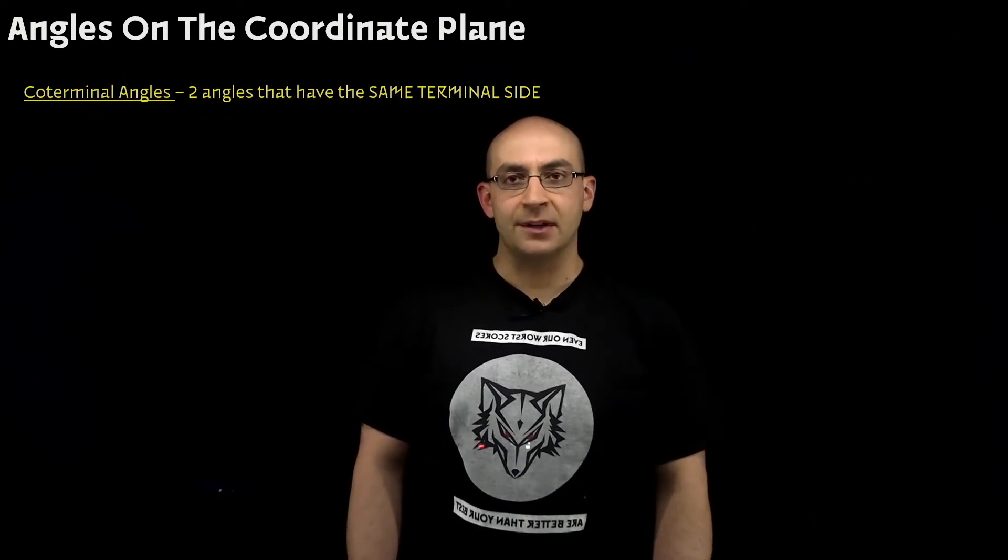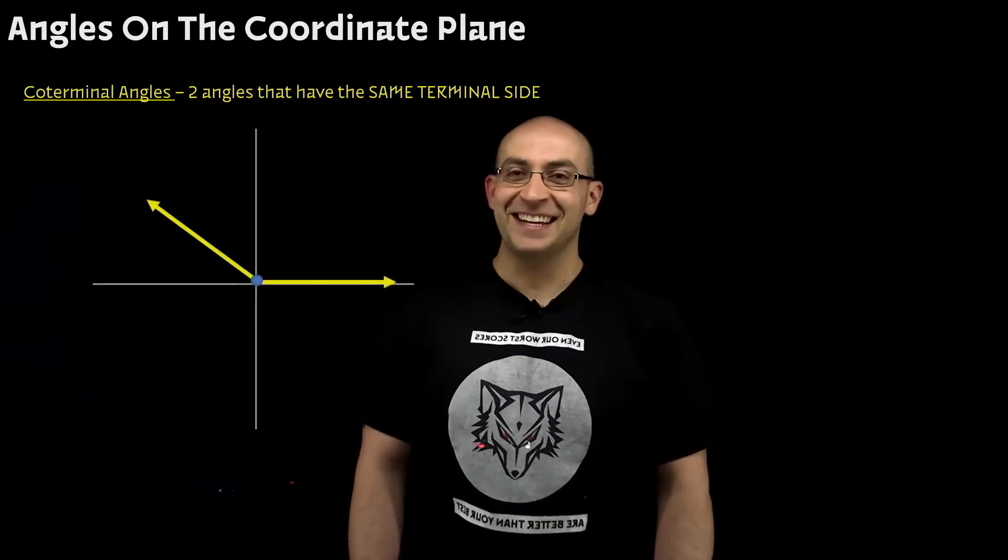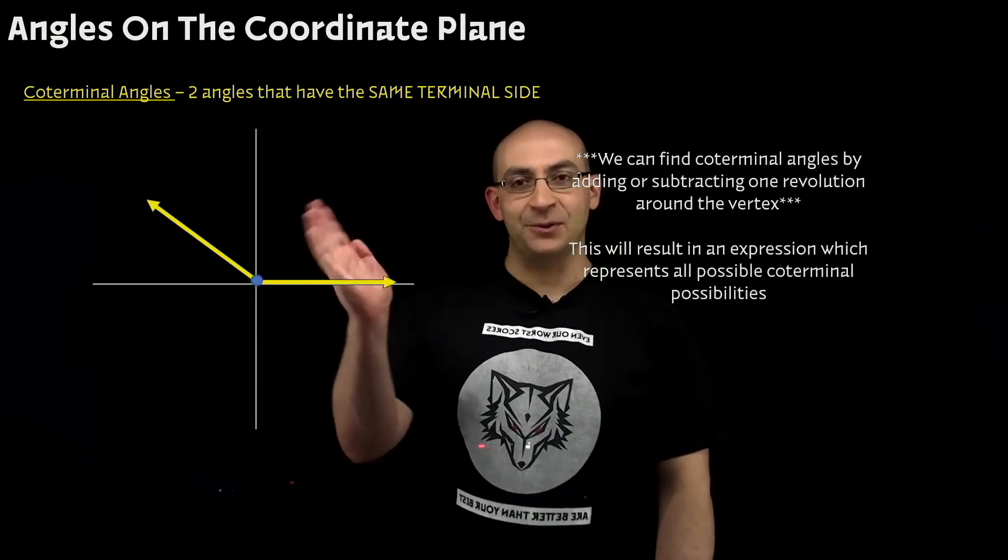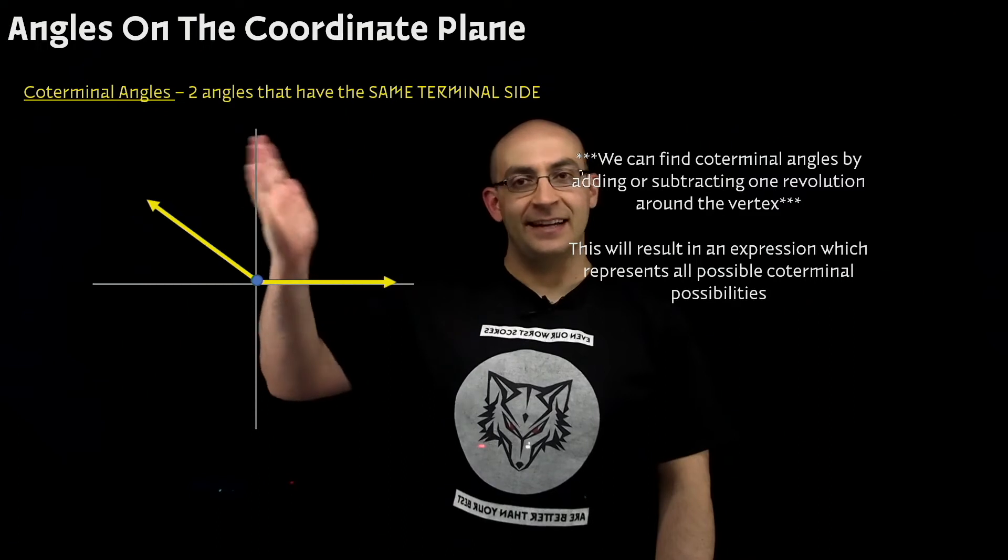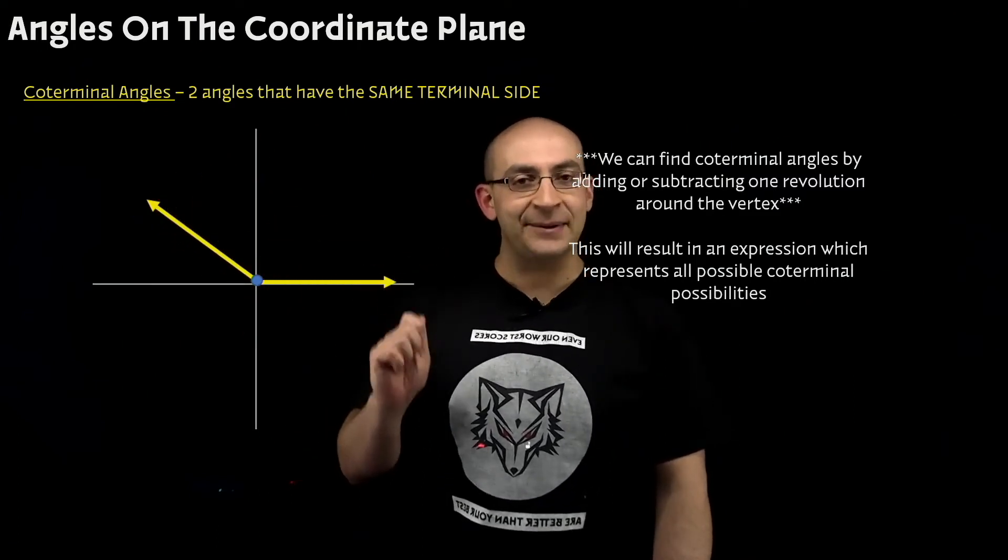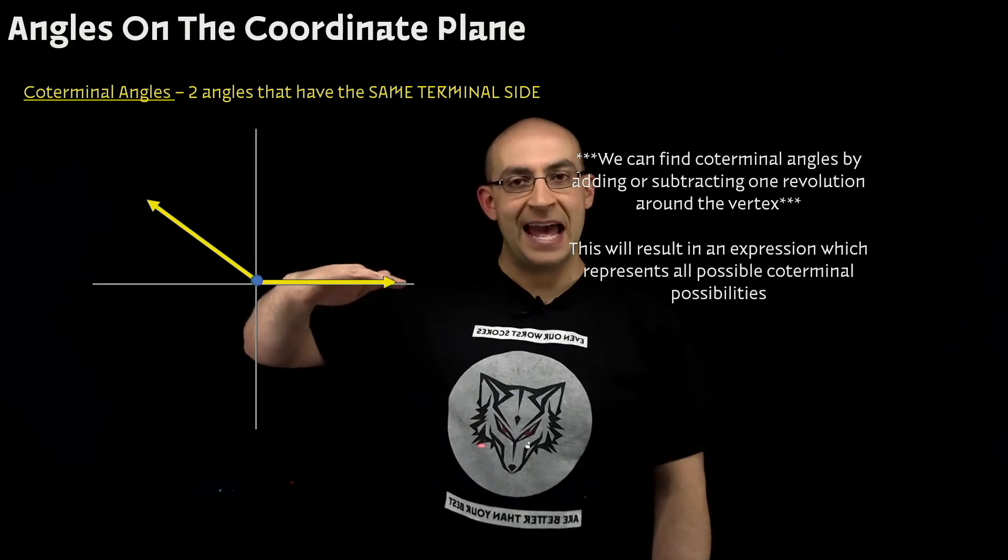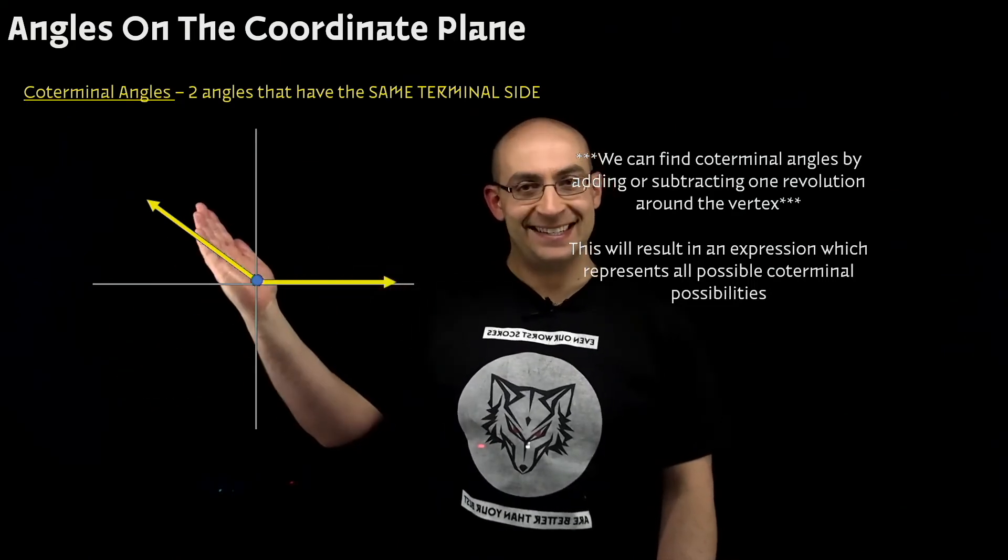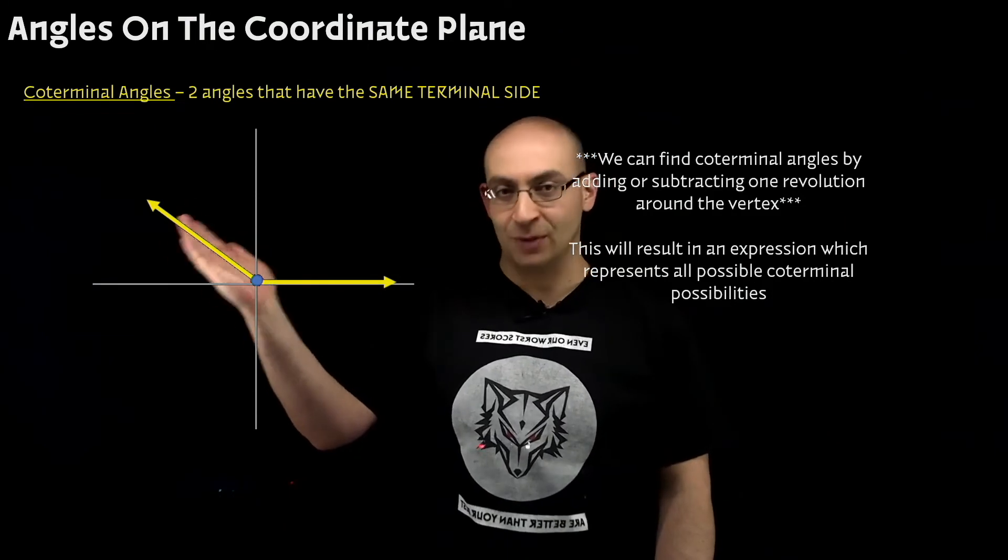Coterminal angles are two angles that have the same terminal side. Let's take our angle from before. The first angle we have starts at the initial side and ends up at the terminal side. Its coterminal angle pair is the angle that starts at the initial side, but goes around and meets it at its same terminal point.